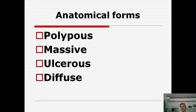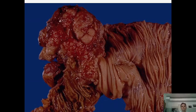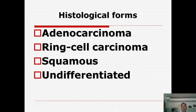The anatomical forms of cancer in the large intestine include: polypoid (massive form), ulcerative, and diffuse growth. In this photo you can see the polypoid form of cancer. Histological forms: most often adenocarcinoma; next is signet ring cell carcinoma and undifferentiated form; squamous carcinoma may occur in the zone of the anus; and other undifferentiated histological forms.